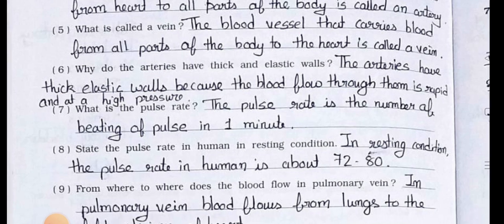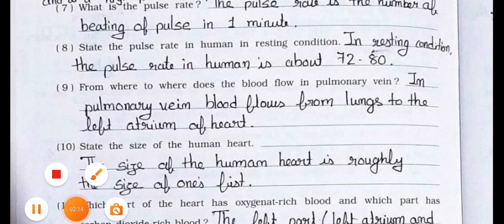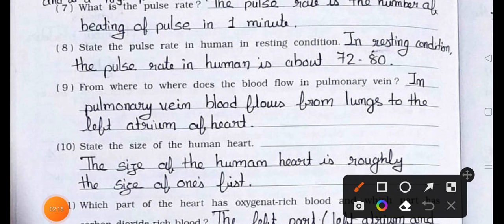Question number 8: State the pulse rate in a human in resting condition. Answer: In a resting condition, the pulse rate in a human is about 72 to 80.